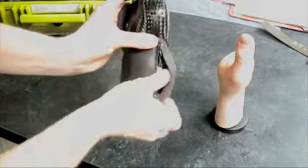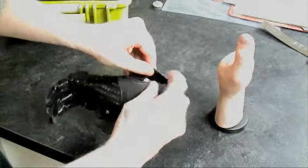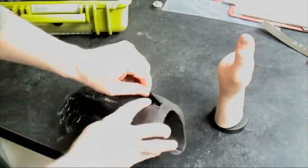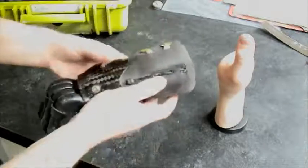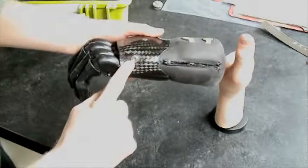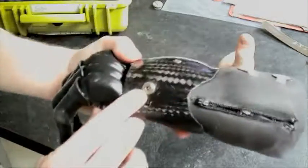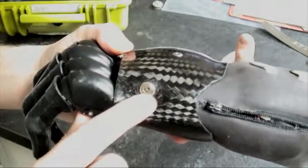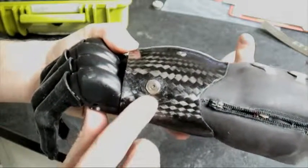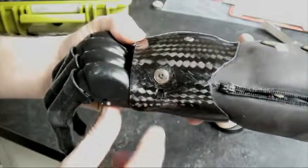So the battery is tucked inside there. There's a charging port so that you can charge the prosthesis and an on-off switch for powering it.